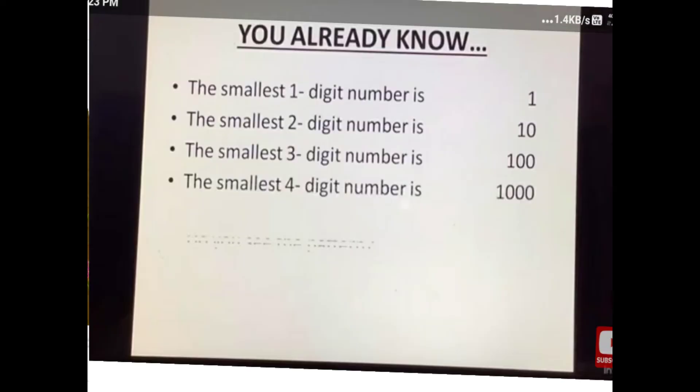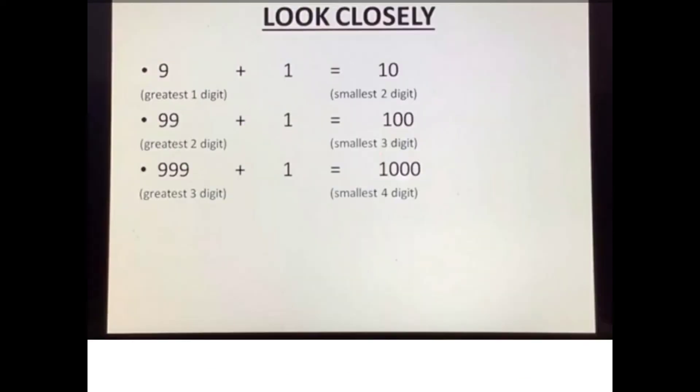You already know the smallest one digit number is 1, the smallest two digit number is 10, the smallest three digit number is 100, and the smallest four digit number is 1000.